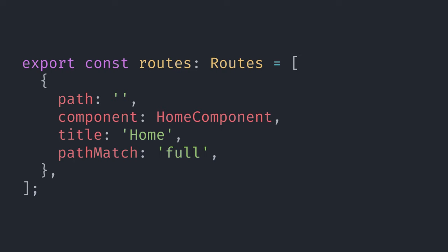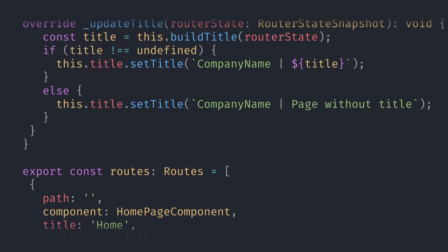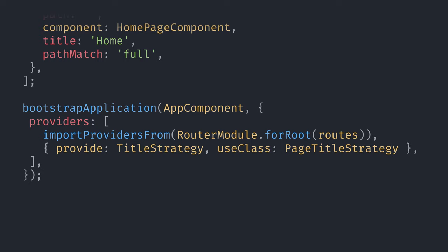One common task in web applications is changing the page title on each route. In Angular, this used to be a very manual process, but now we can simply define the page title in the route definition. If your title is not static and depends on something from your API, Angular 14 has you covered. You can customize the title dynamically by extending the title strategy class from the Angular router and providing your new custom title strategy instead of the default one.